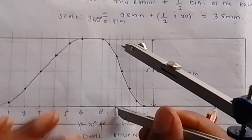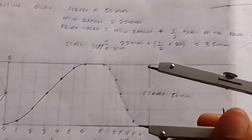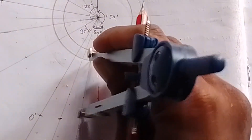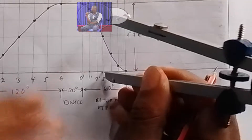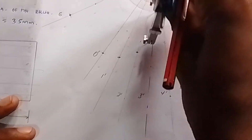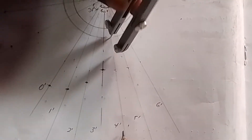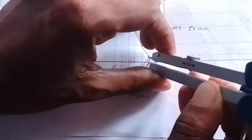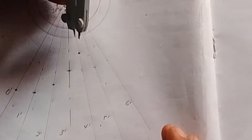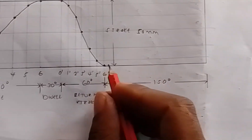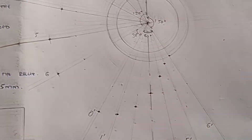For number two prime, stand on the two prime line and strike an arc. Then number three prime — it is on this center line — strike an arc. For number four prime, transfer that distance here on the number four prime line and strike an arc. Stand on the number five prime line and mark. For six prime, there is no distance, so it is at this particular point. From there we have been able to achieve all the required points.